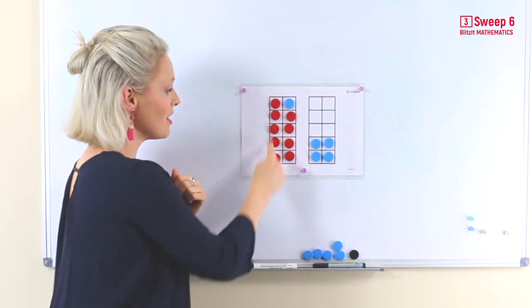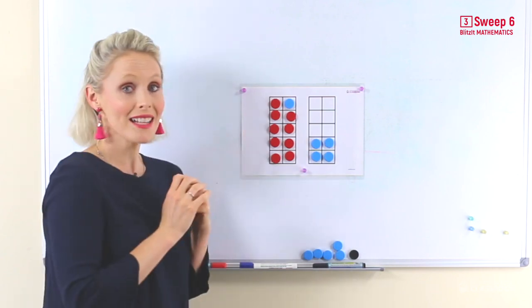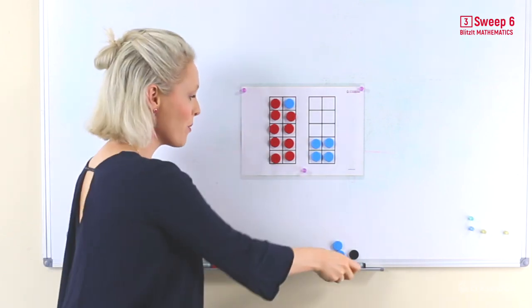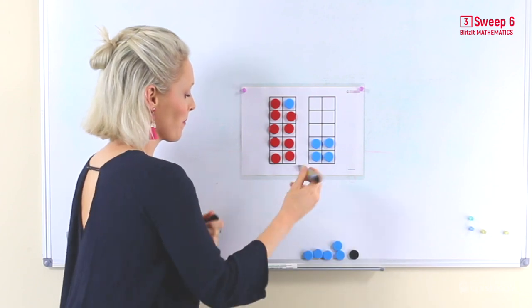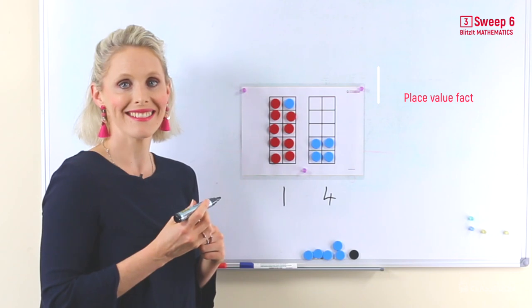Can you see the nine and the five? Now, with your eyes, nine and five equals one group of ten and four ones. Fourteen. Well done.